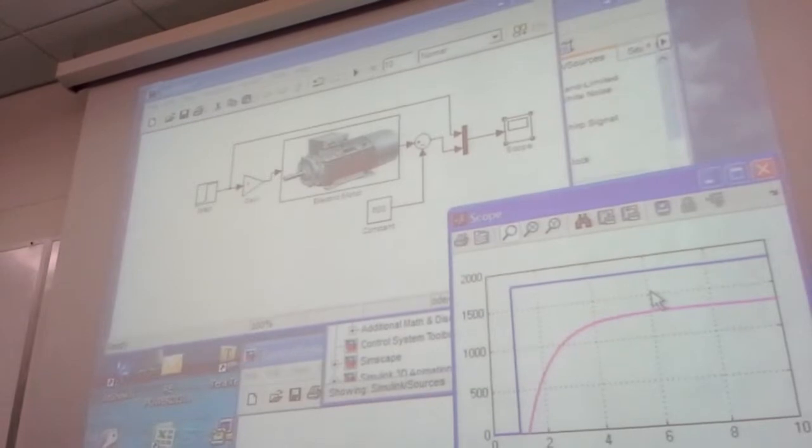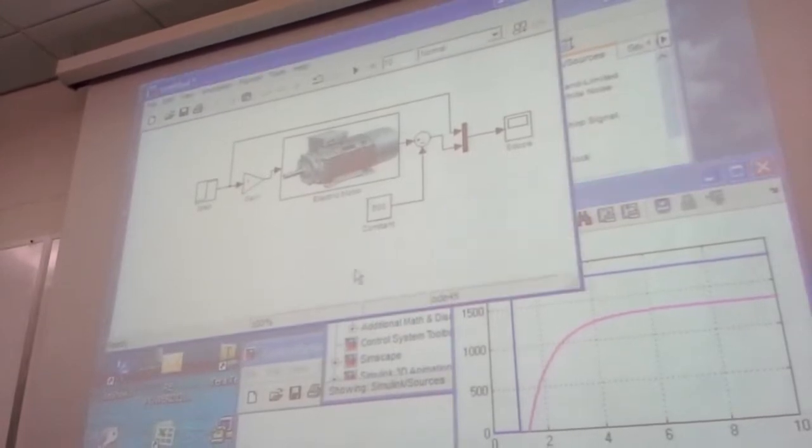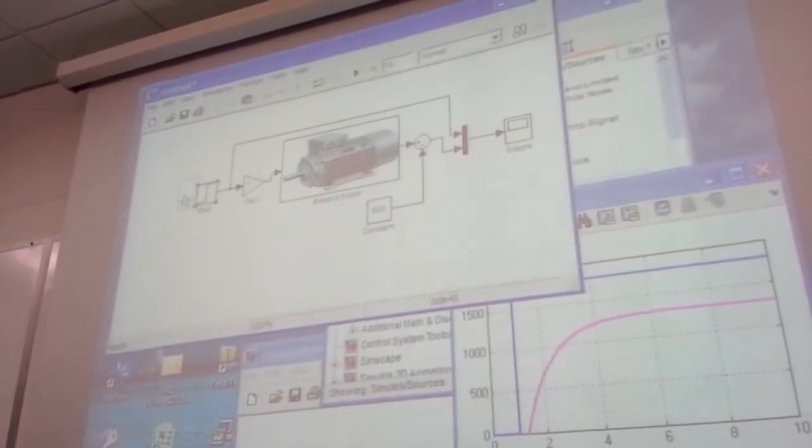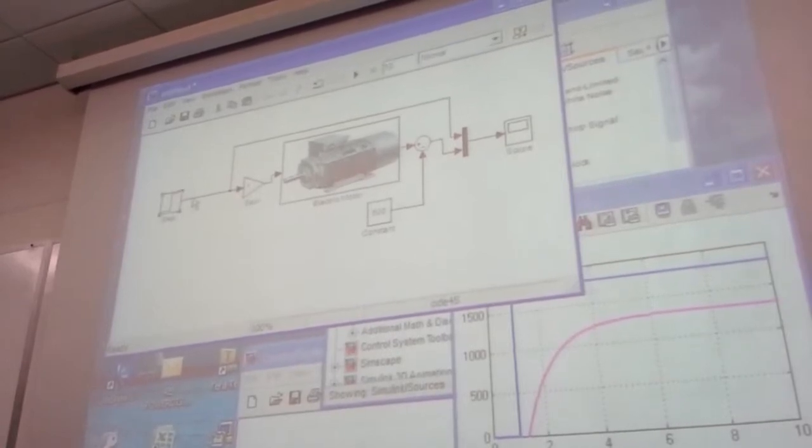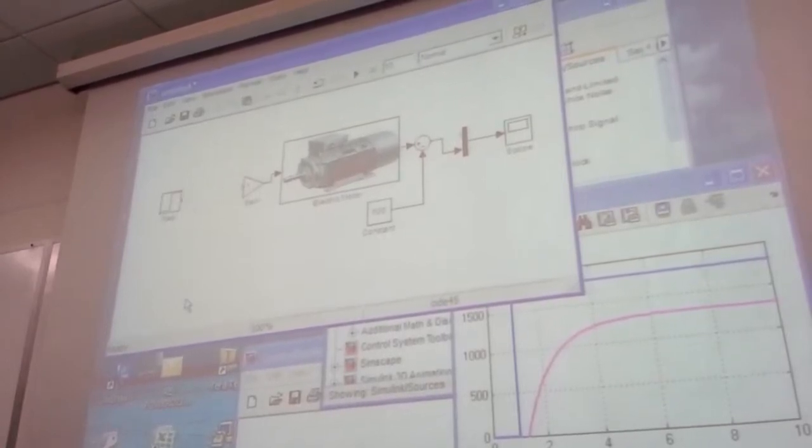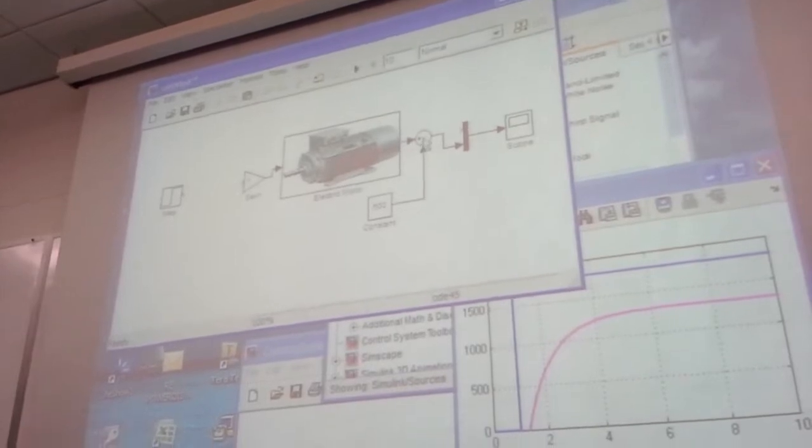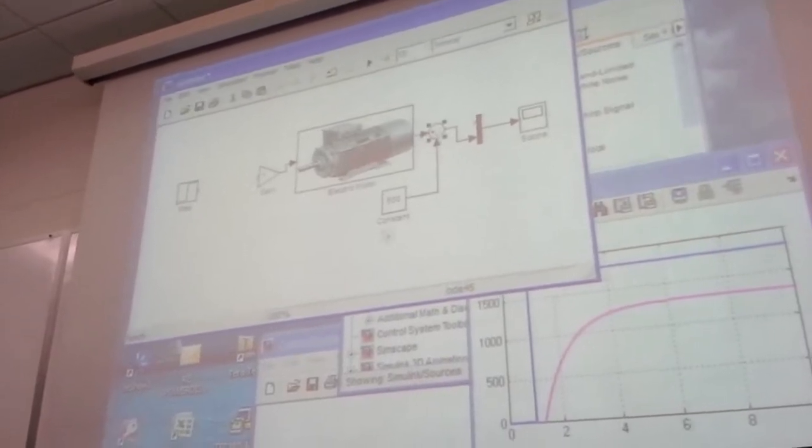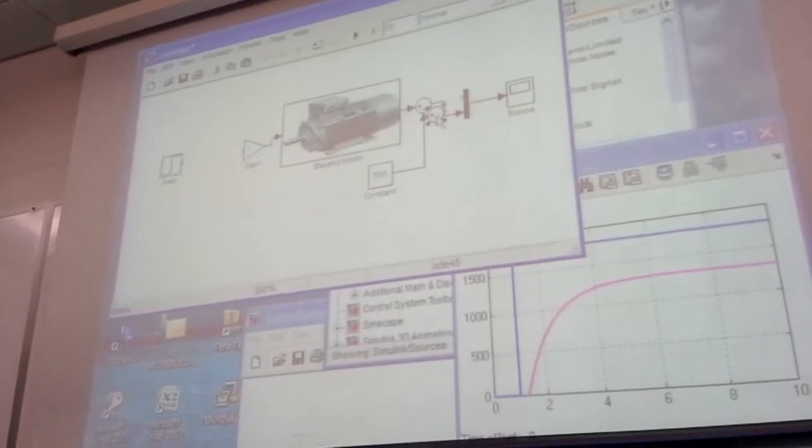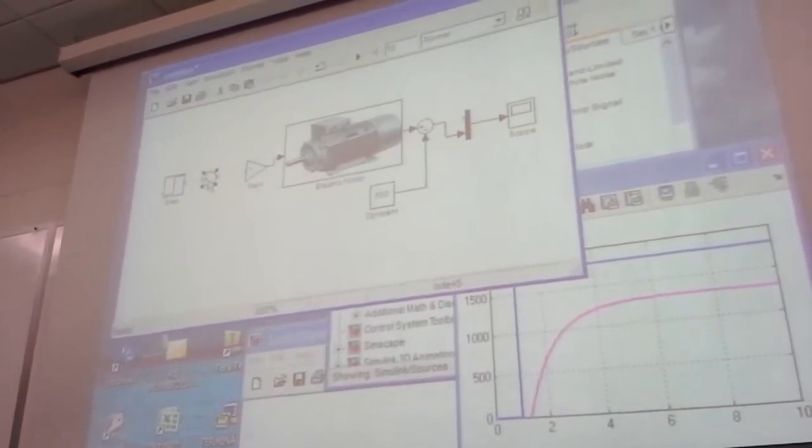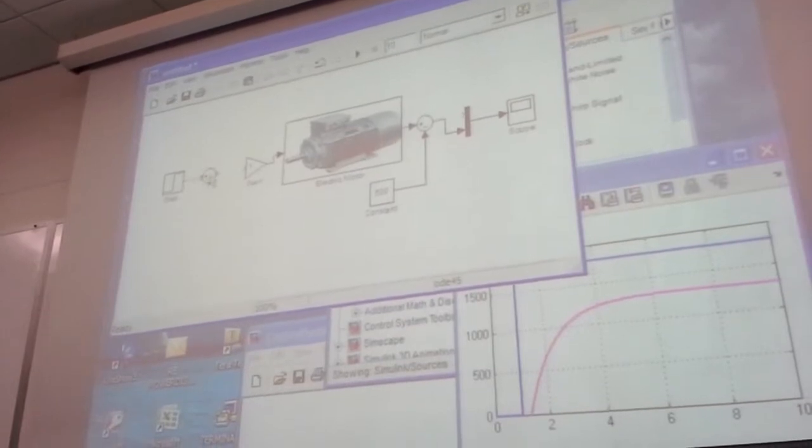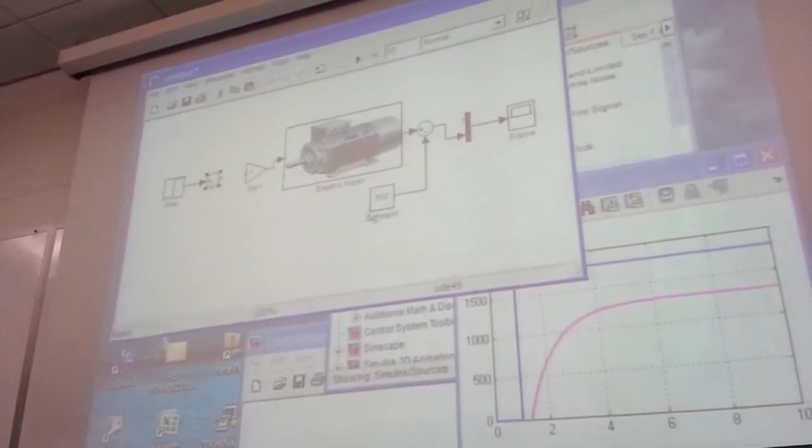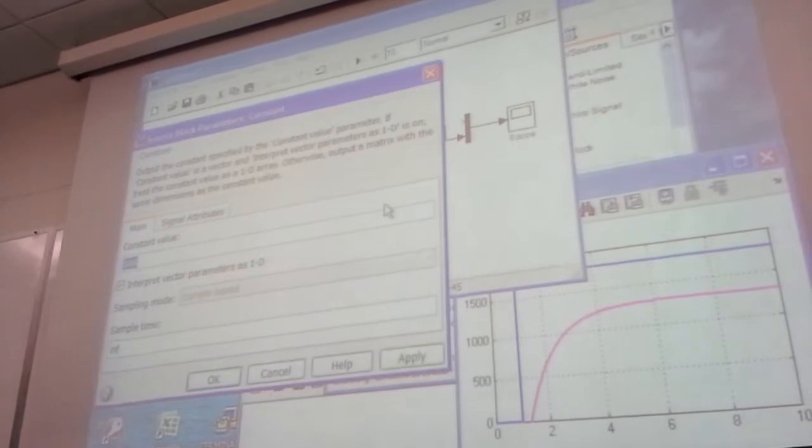So one way you can do a closed loop is here. Instead of this, right here, now another error here. Let's see. For the time being, let's assume there is no load. So it's a zero.